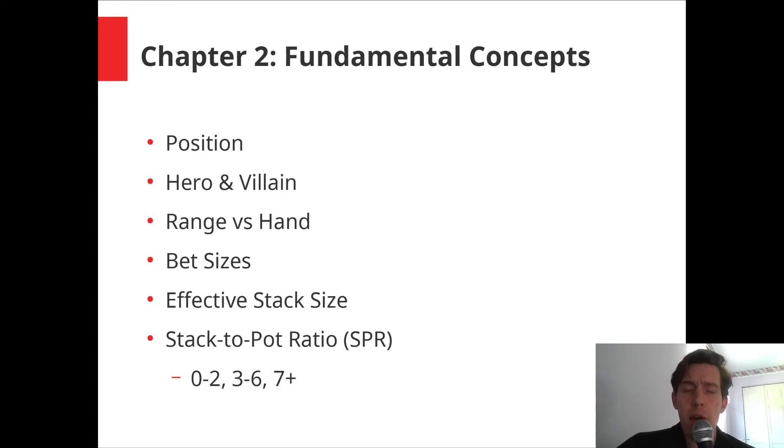When the stack-to-pot ratio is small, say between 0 and 2, we just value hands a lot differently than we would when it's higher, like 7+. So, for example, in the ranges of 0 to 2, a stack-to-pot ratio, we're just going to have to go with hands that are over pairs, and two pairs, and top pair.